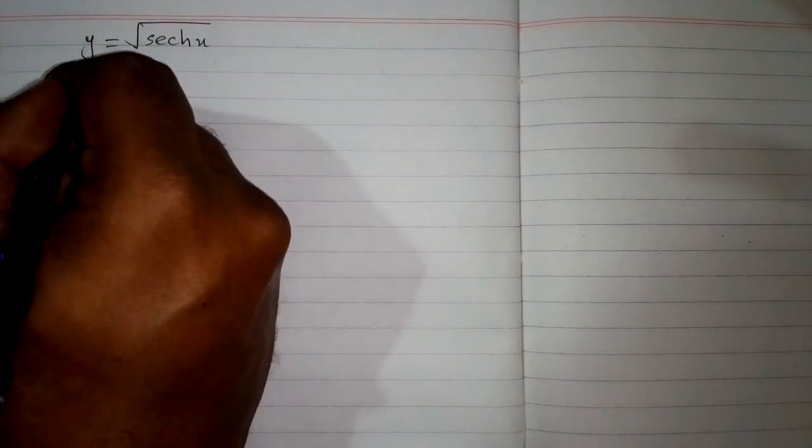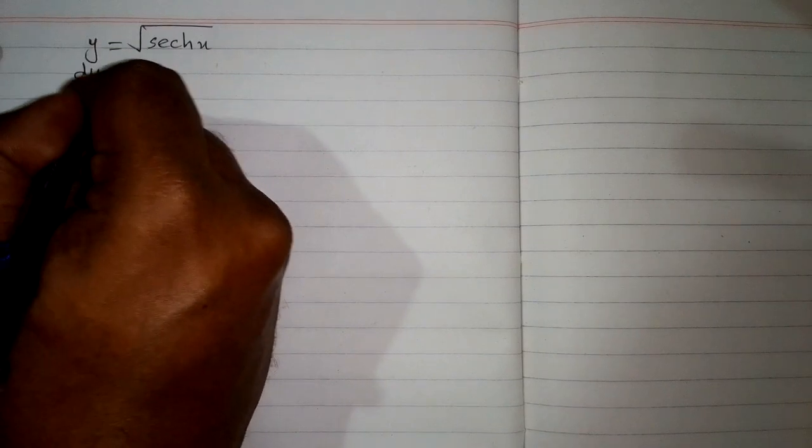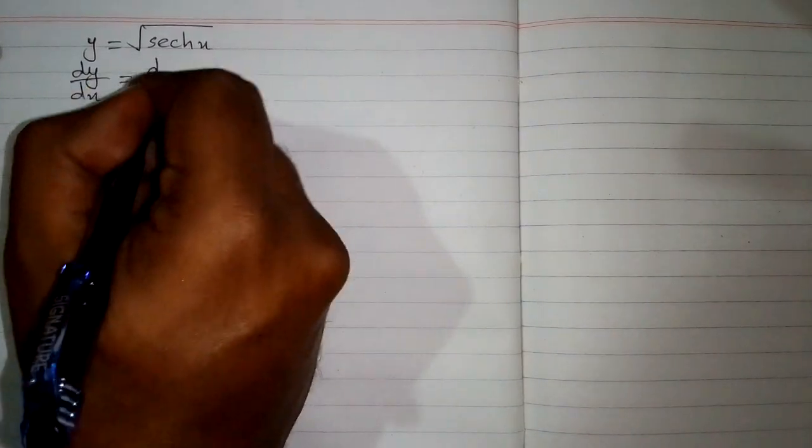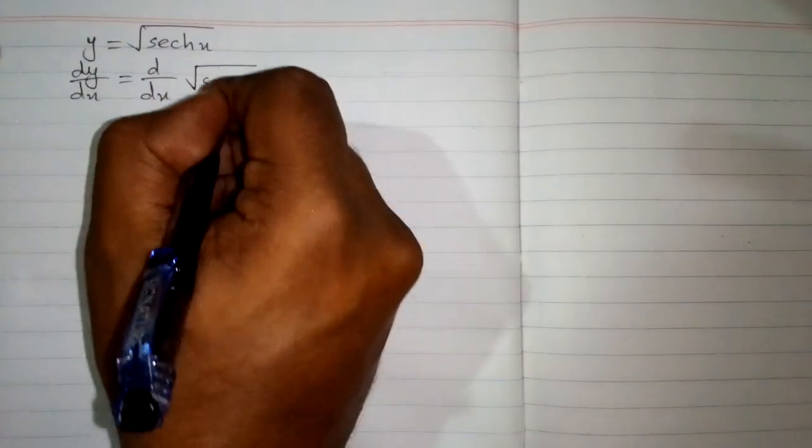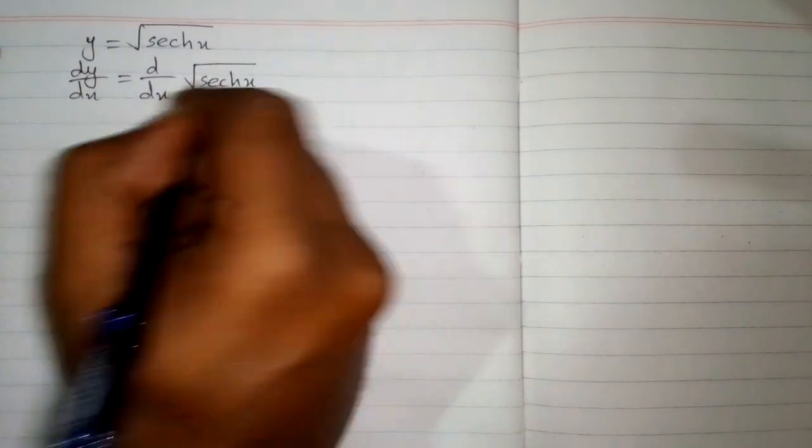In this video we will find the derivative of the function y equals square root of hyperbolic secant x. So first of all we will differentiate both sides with respect to x. So we have dy by dx is equal to d by dx of square root of hyperbolic secant x.